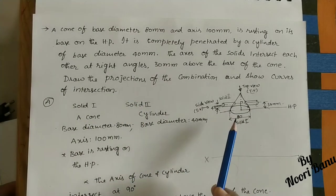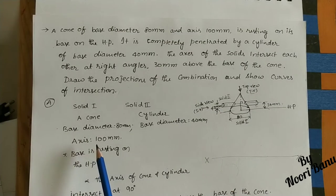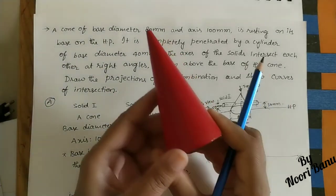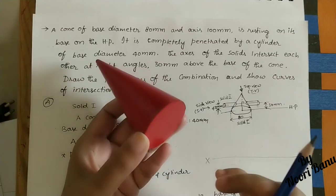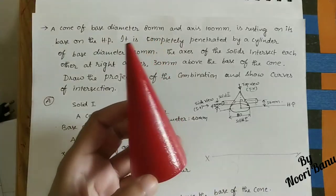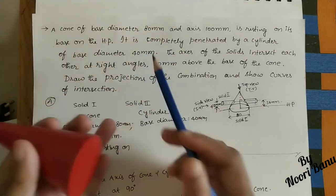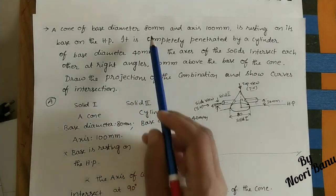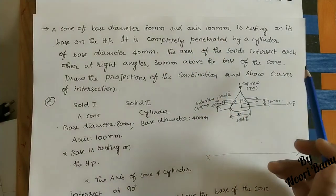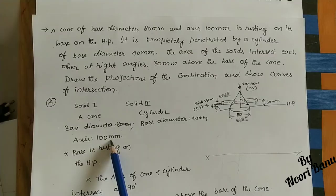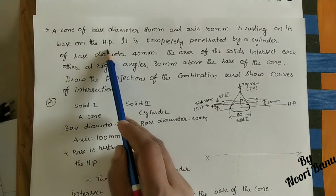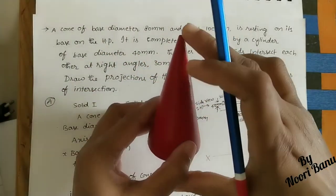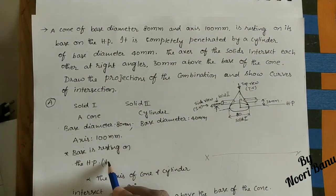Let us take the given data for solid one and solid two, after which we will use drawing instruments to do the projections. Solid one is a cone with base diameter 80 mm and axis (height) 100 mm. The cone is resting on its base on the HP (horizontal plane), so its position is vertical.